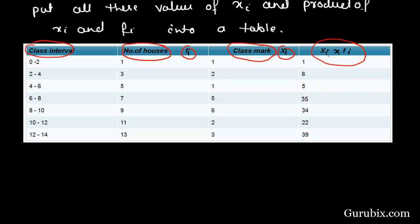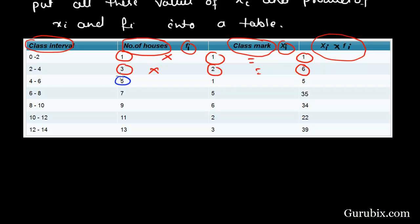We can see the first term of xi fi is due to the first term of fi into the first term of xi. Similarly, we can see 3 into 2 is equal to 6, and 5 into 1 is equal to 5.